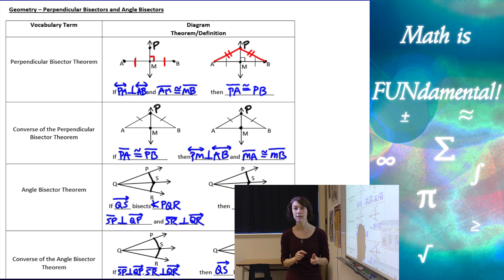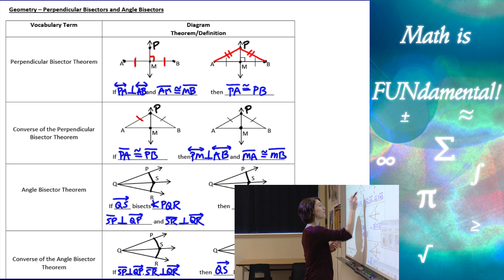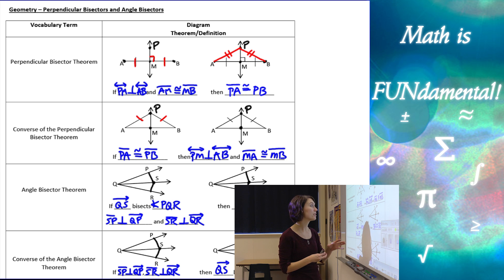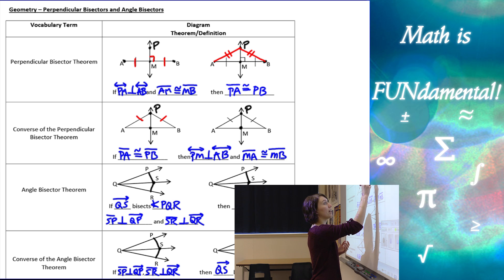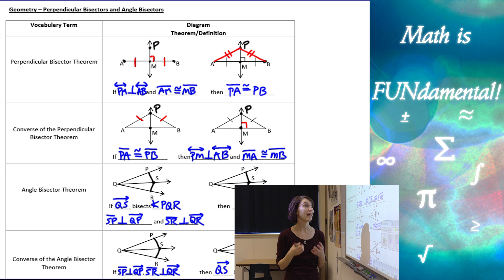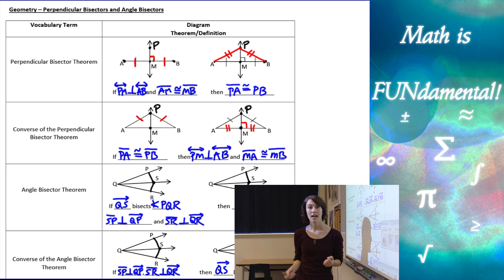Next, if we flip that and do the converse of the perpendicular bisector theorem, this says that if I already know that line PA is congruent to PB, then I can use the converse of this theorem to state that line PM must be perpendicular to AB and segment AM has to be congruent to MB.